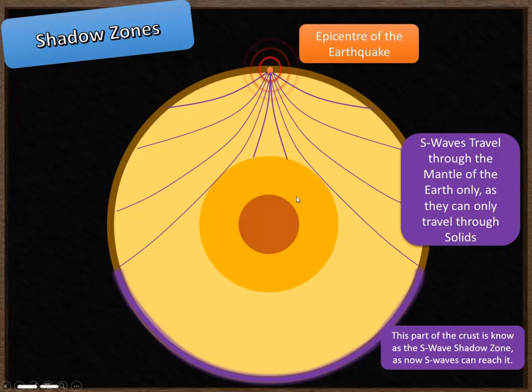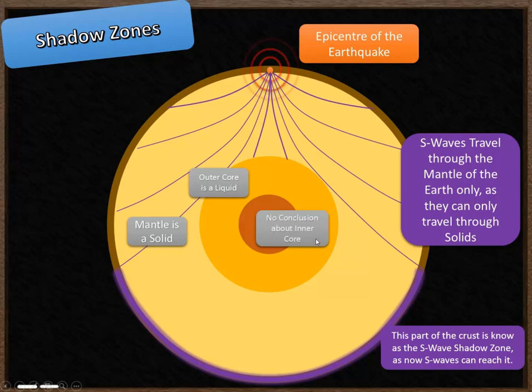We can make some conclusions from this about the structure of the Earth. We know that the mantle is going to be a solid. We know the outer core must be a liquid as the S waves are blocked by it. But we can't make any conclusions about the inner core. The S waves can't get to the inner core because they're blocked by the outer core. Therefore, we don't know, using this technique, whether the inner core is a solid or a liquid.